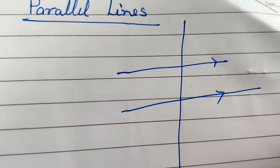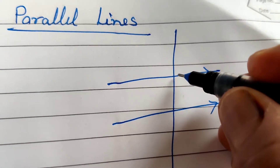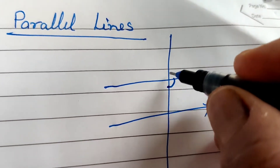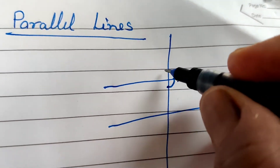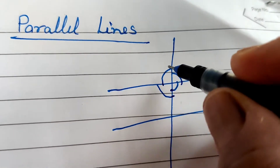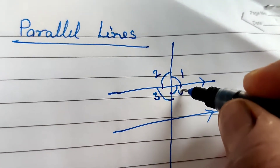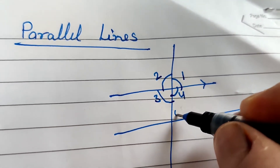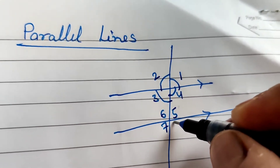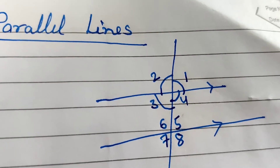What are corresponding angles? When there are two parallel lines cut by a transversal, how many angles are made? Four angles are made at the first intersection — angles 1, 2, 3, 4 — and four at the second — angles 5, 6, 7, 8. Total eight angles are formed here.